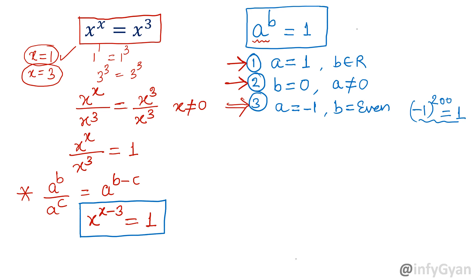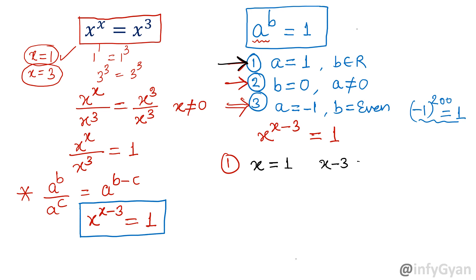Now applying this to our equation x raised to the power x minus 3 equal to 1. Solution 1: base x equal to 1, where x minus 3 must be real. Checking the exponent: 1 minus 3 equals minus 2, which is real. So x equal to 1 is one solution. Solution 2: exponent x minus 3 equal to 0, which means x equal to 3, where x is not equal to 0 — which is satisfied. So x equal to 3 is a solution.